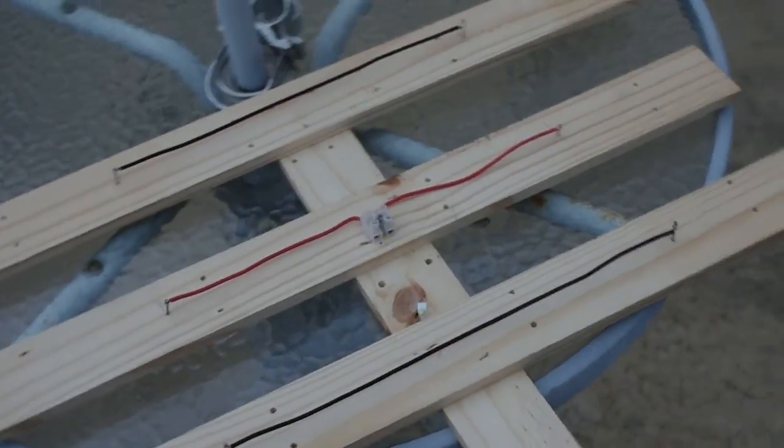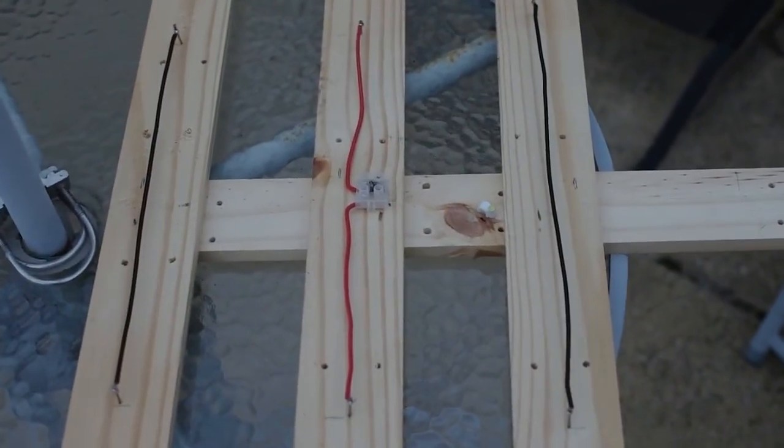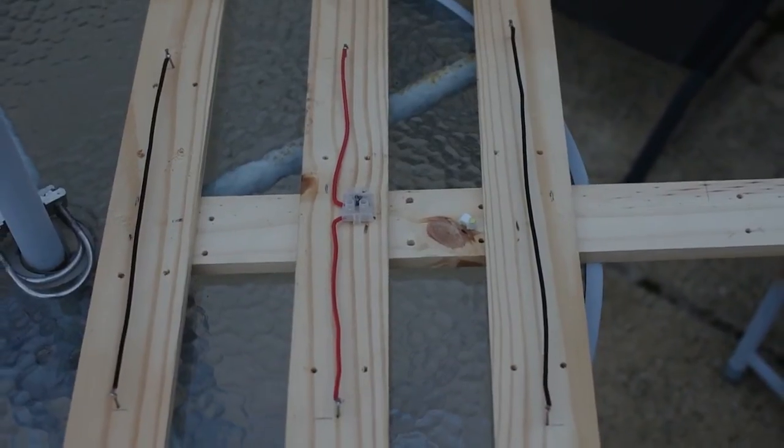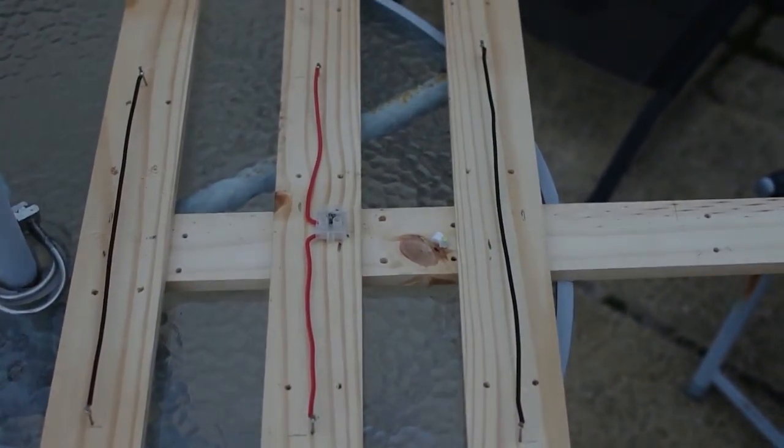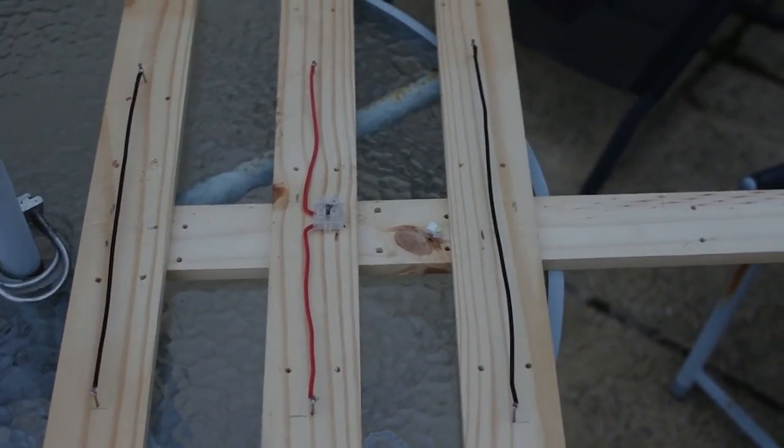So there you go, a very quick thrown together beam for 70 centimeters. It just goes to show you don't have to buy expensive equipment when, in this case, parts of an old wardrobe, a couple of nails, and a few bits of wire will get you on the air without too much trouble.